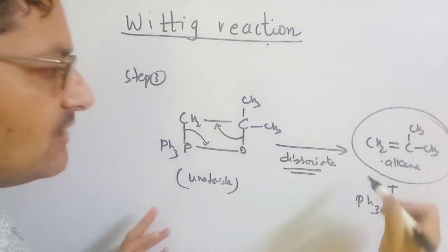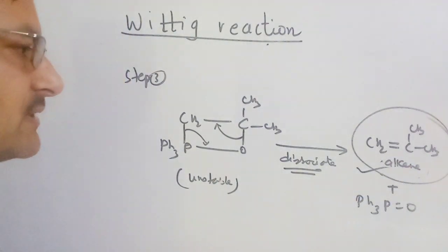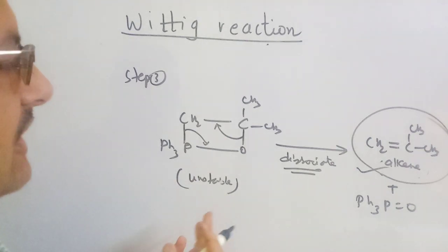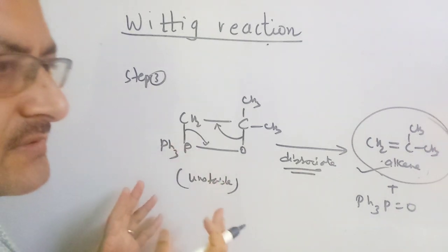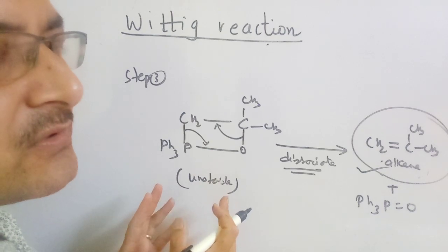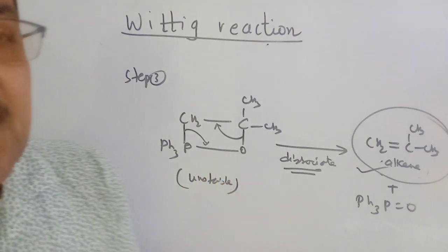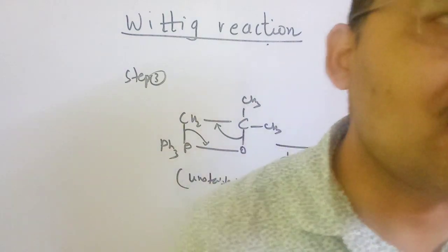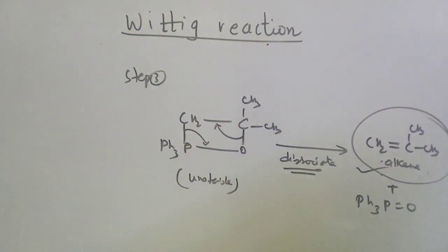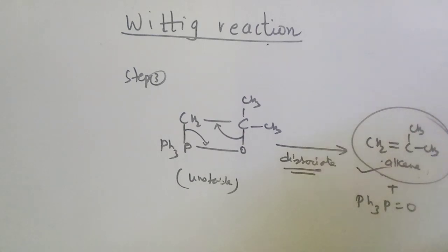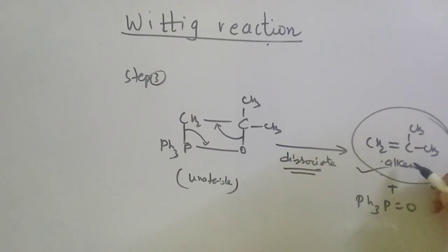We are talking about a Wittig reaction that forms an alkene from a carbonyl compound. We have three steps: first, the ylide CH2 has a negative charge and performs nucleophilic attack on the carbonyl carbon; then a betaine-type phosphorus intermediate forms; then the cyclic four-membered ring breaks down to give the olefin alkene and triphenylphosphine oxide as a side product.